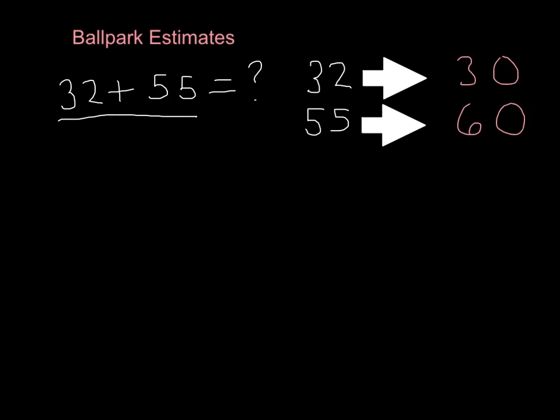Now it's time to add. 0 plus 0 is 0. 6 plus 3, or 3 plus 6, is, let's see, 6, 7, 8, 9. So we have 90.